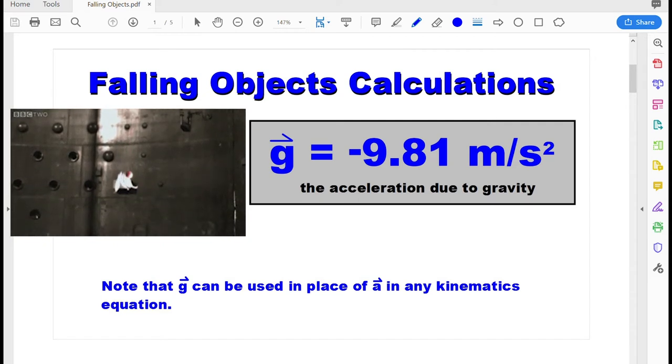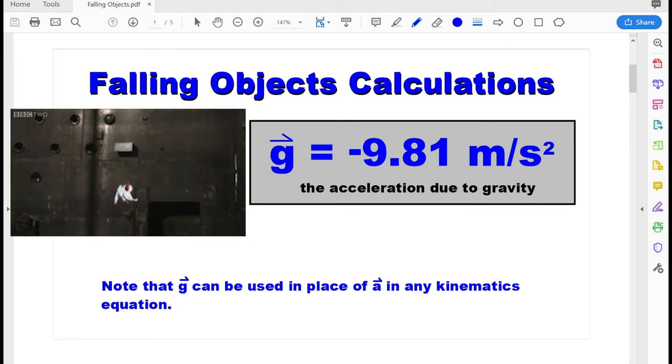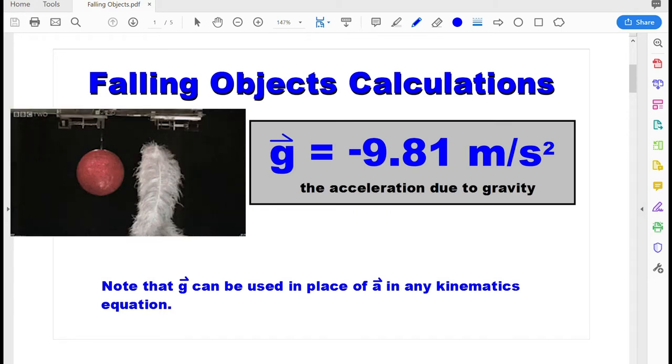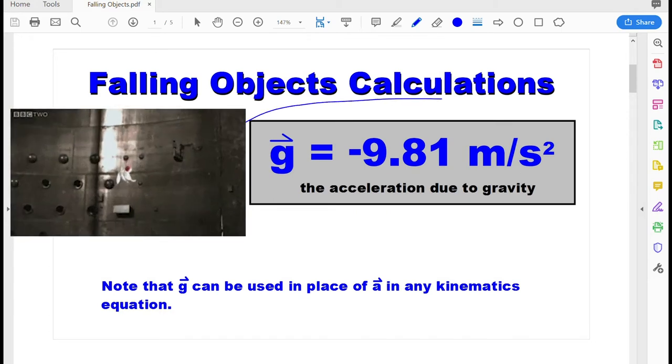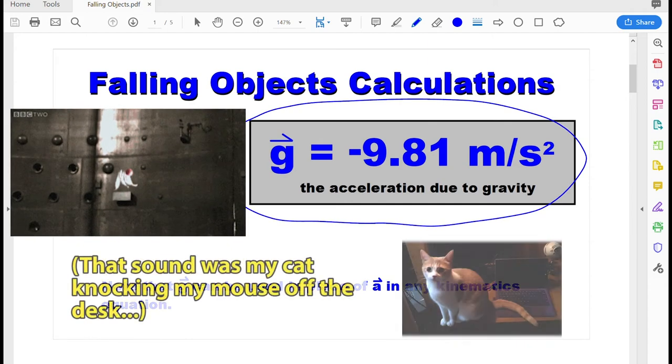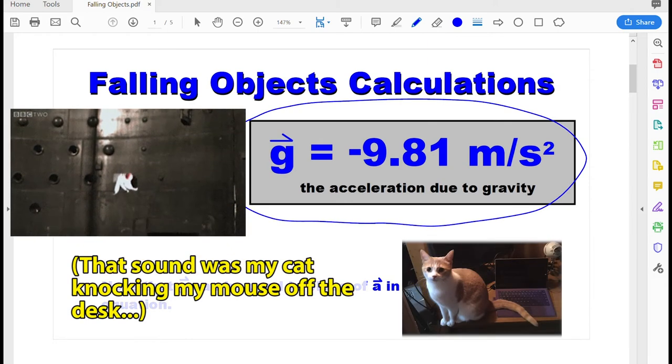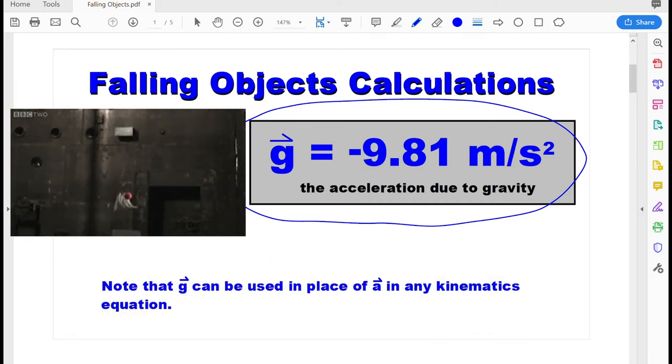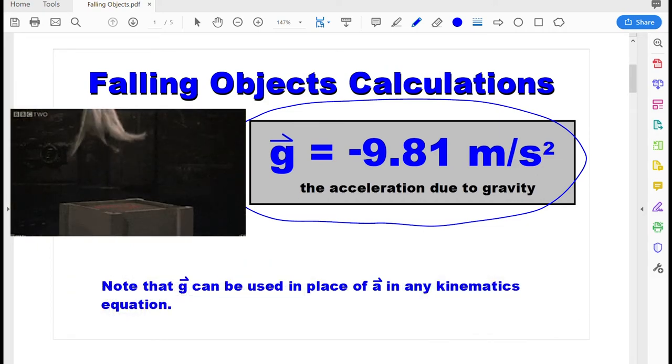The first thing we got to think about is the fact that when an object falls, any object, doesn't matter how heavy it is or what size it is, if there's no air resistance acting on that object, it's going to fall with an acceleration of negative 9.81 meters per second squared. That's the acceleration due to gravity. That number is in your data booklet, so you don't have to memorize it.